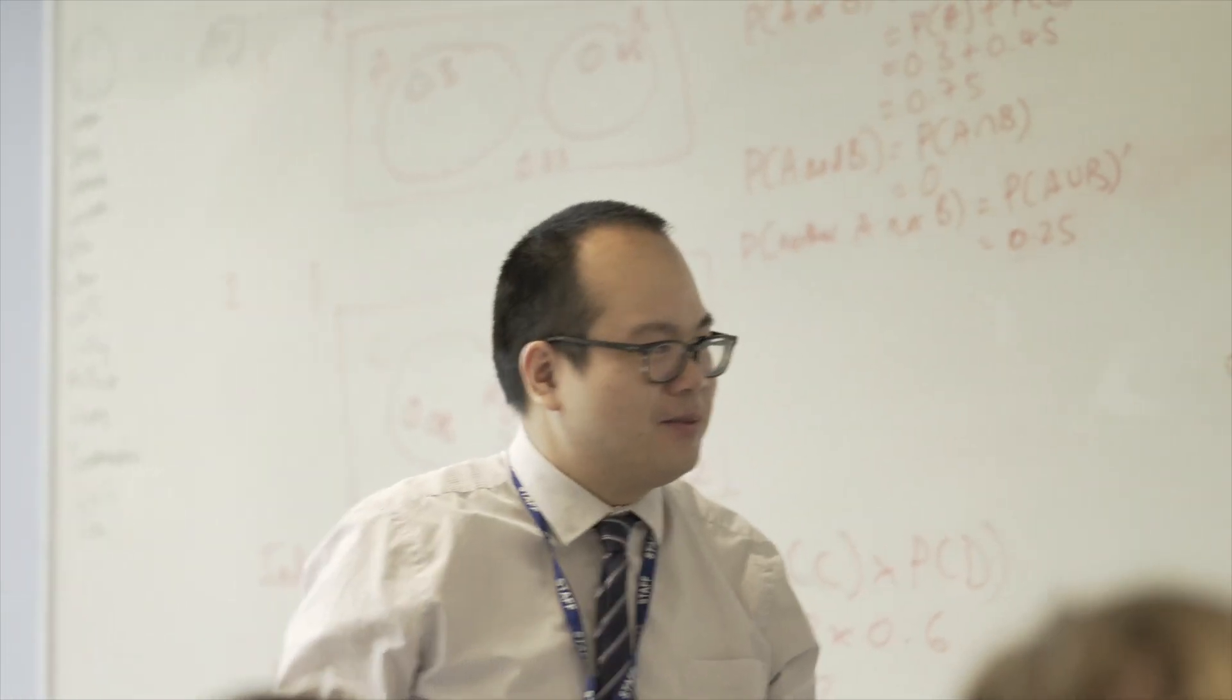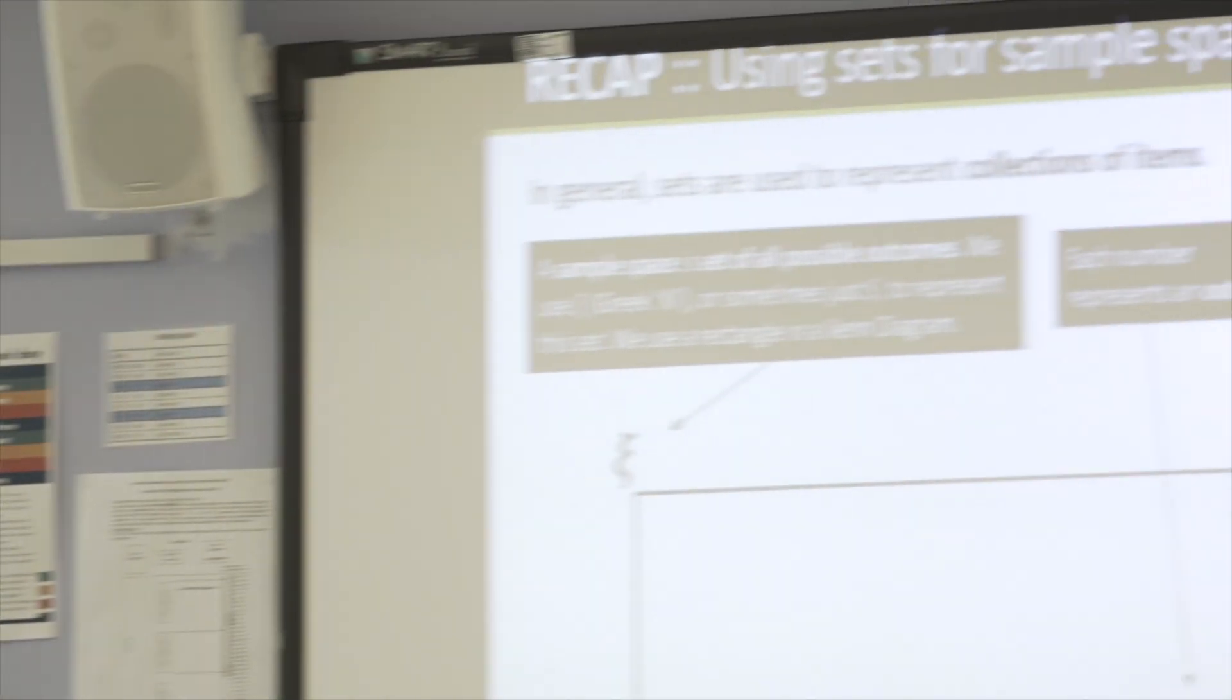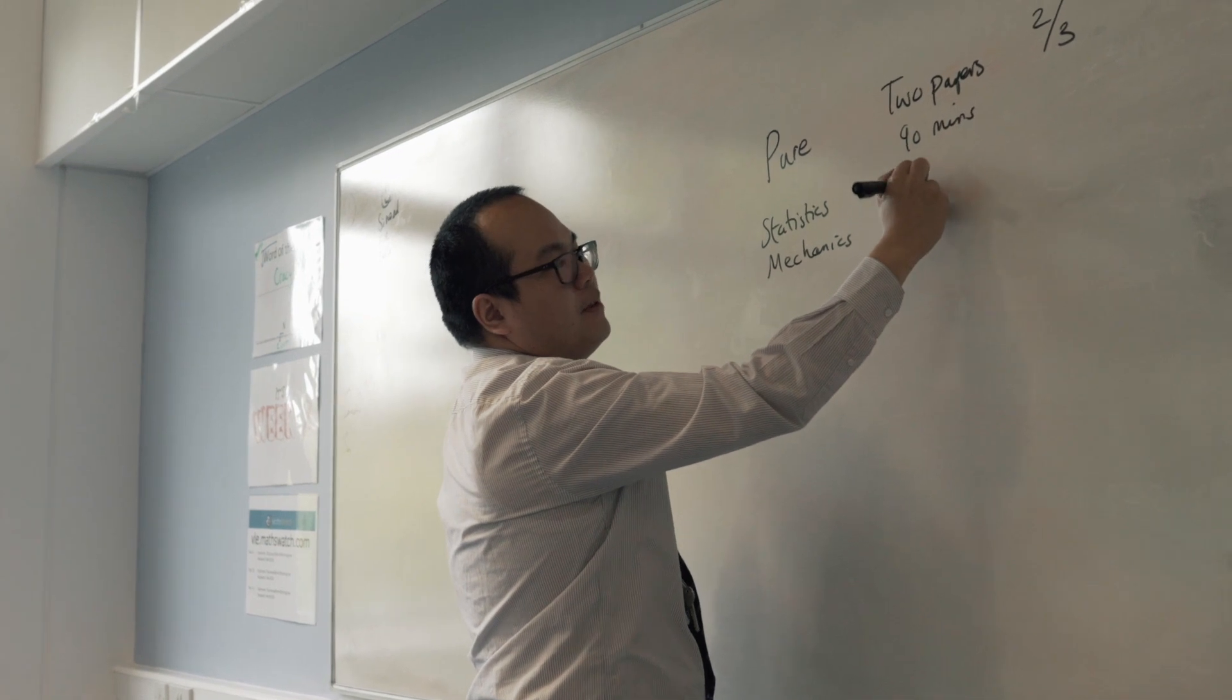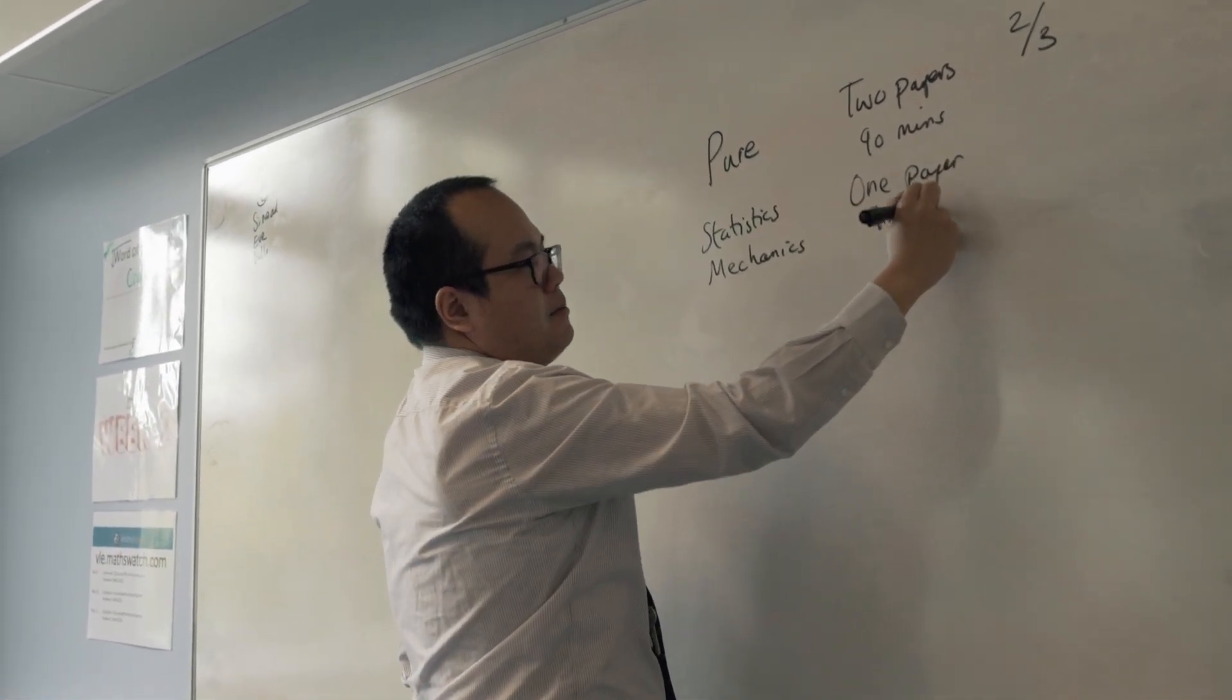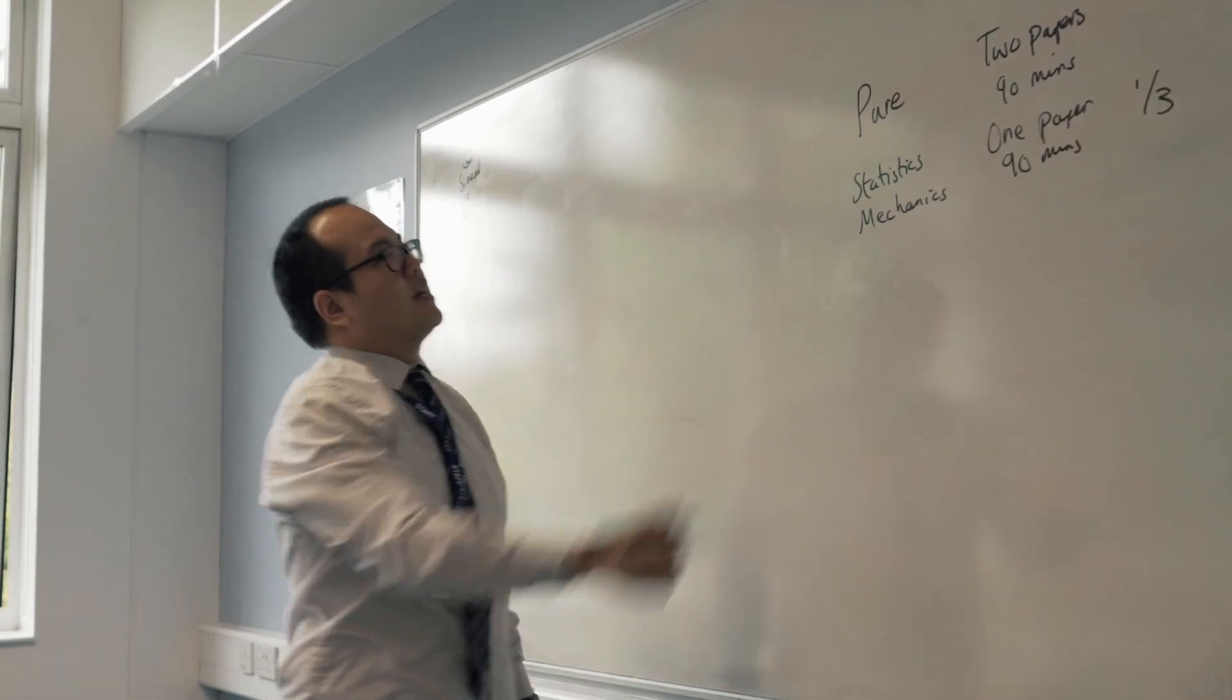Then you'll do a paper on Statistics and Mechanics and you do one paper on this. Again, it's a 90-minute paper and this is worth one-third of the A-Level. So this is A-Level Maths.